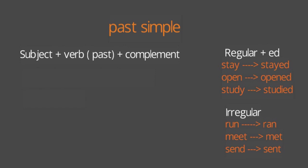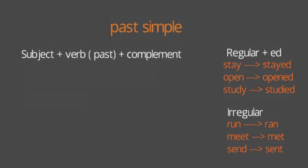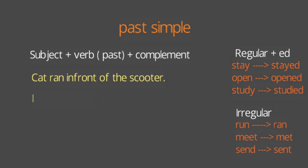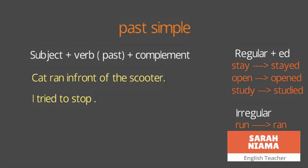Those are irregular verbs — you should memorize their past forms. A past simple sentence example: 'A cat ran in front of the scooter, I tried to stop.' In the first sentence, 'run' is an irregular verb. In the second sentence, 'tried' is a regular verb — we turn 'try' to 'tried' by adding 'ed' to the end.